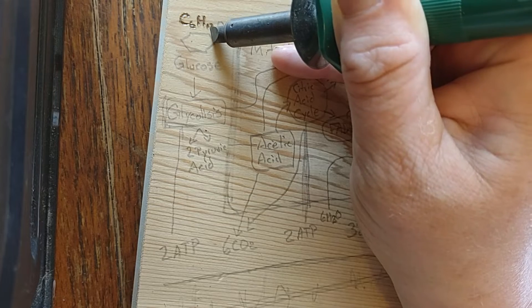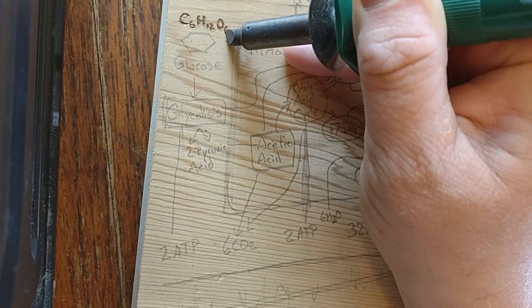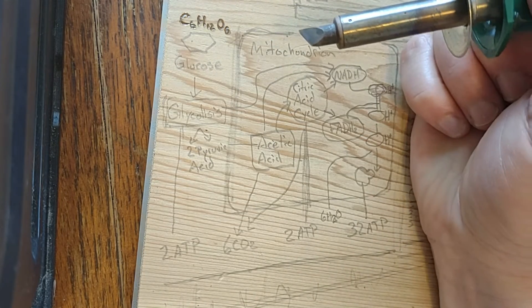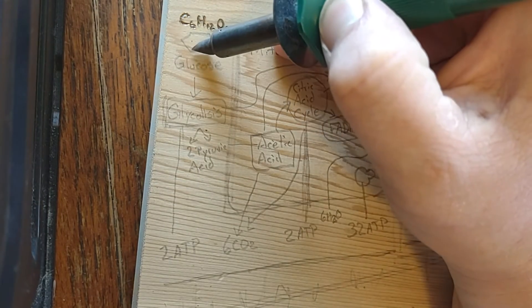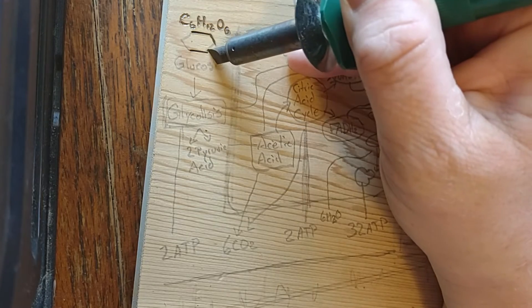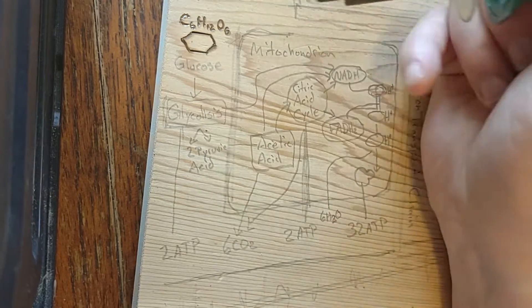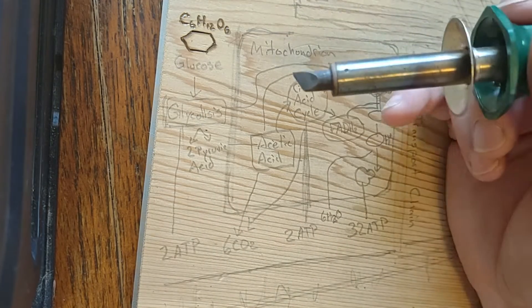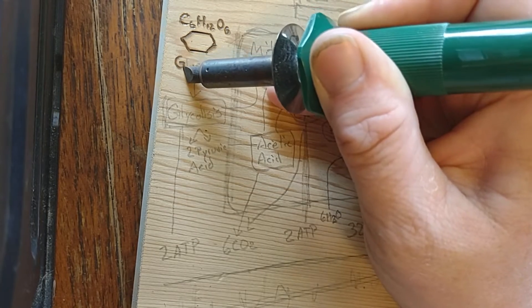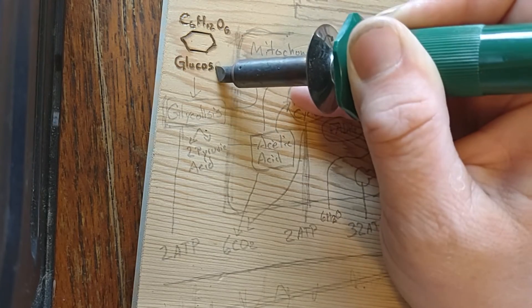In aerobic conditions, the process converts one molecule of glucose into two molecules of pyruvate, pyruvic acid, generating energy in the form of two net molecules of ATP. Four molecules of ATP per glucose are usually produced, but two are consumed as part of the preparatory phase. The initial phosphorylation of glucose is required to increase the reactivity, decrease its stability, in order for the molecule to be cleaved into two pyruvate molecules.